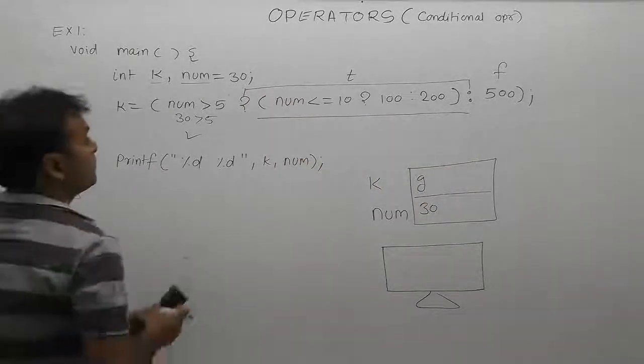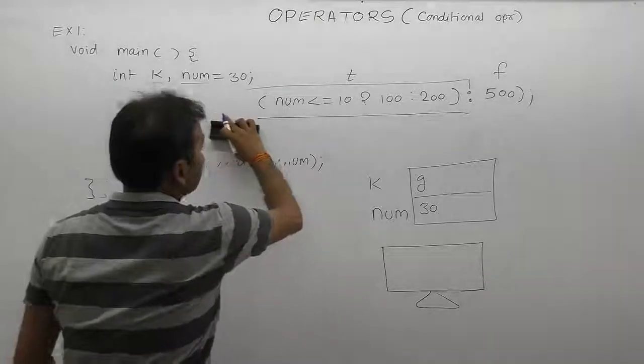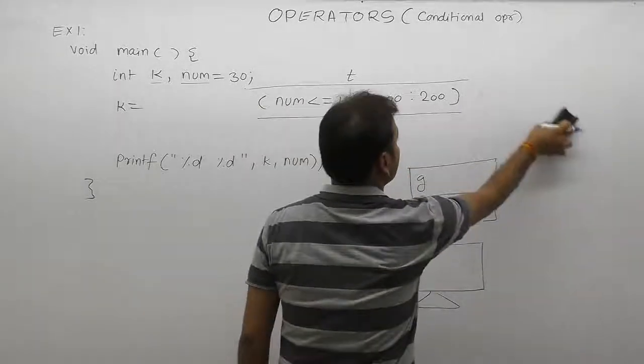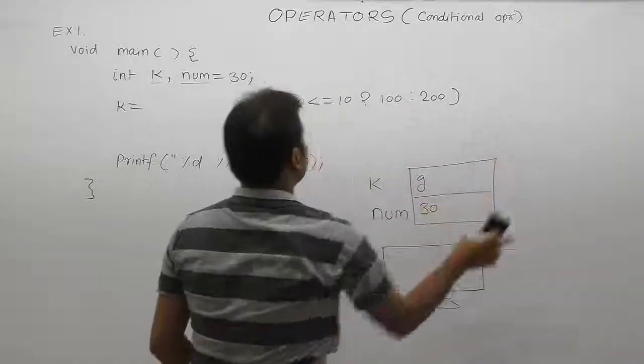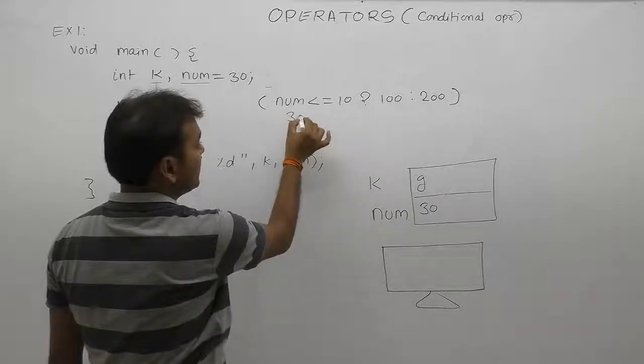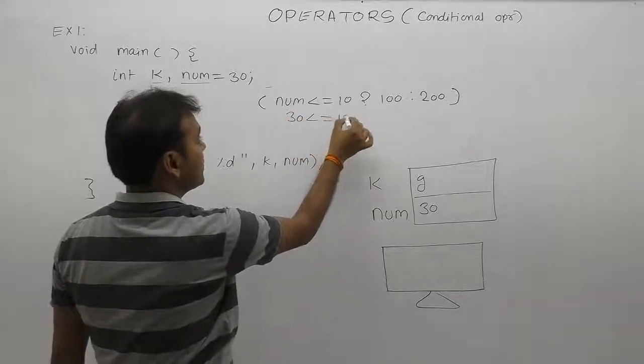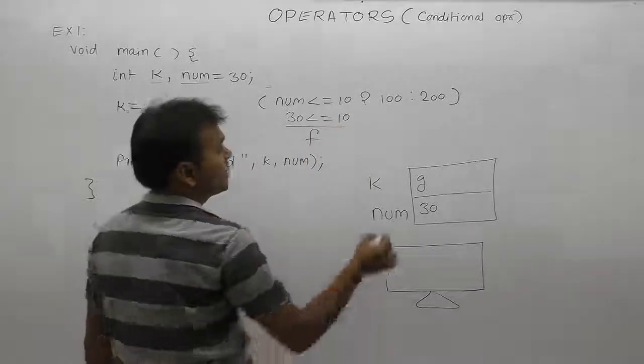Now remove this expression and the remaining part. Then again test the inner condition. The inner condition: the value of num is 30, less than equals to 10. The condition or relation is false. False choice case.